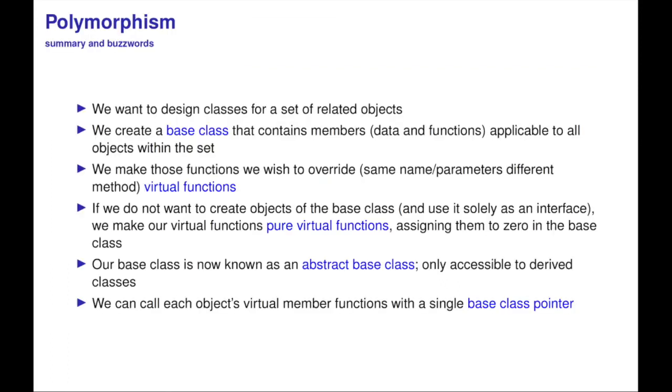Let's summarize. We want to design classes for a set of related objects. We create a base class that contains members—data and functions—applicable to all objects within the set. We make those functions we wish to override (same name, parameters, different methods) virtual functions. If we do not want to create objects of the base class and use it solely as an interface, which is very good practice, we make our virtual functions pure virtual functions by assigning them to zero in the base class. It's enough to do it with one function. Our base class is now known as an abstract base class, only accessible to derived classes. We can call each object's virtual member functions with a single base class pointer. That was it for this week.